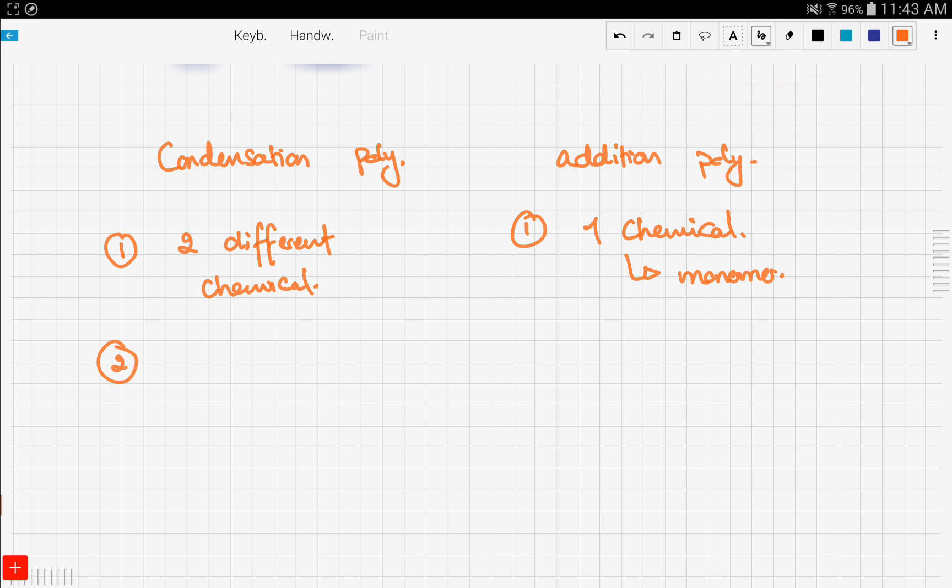In condensation polymerization, we get a polymer plus water or HCl molecule. Unlike addition polymerization, we only get the polymer.